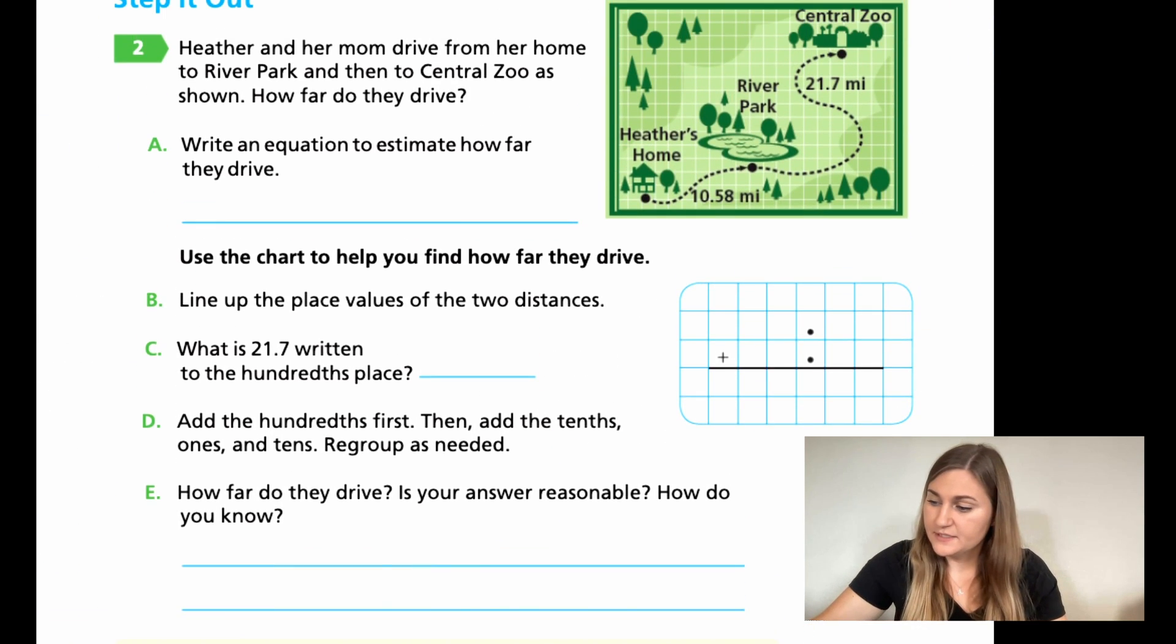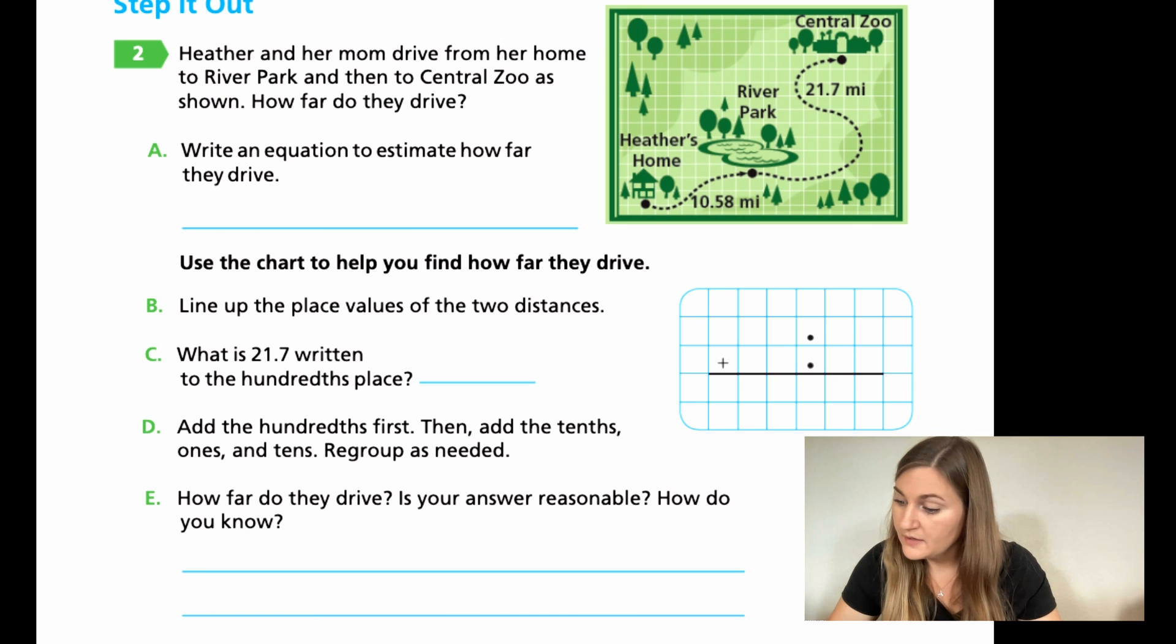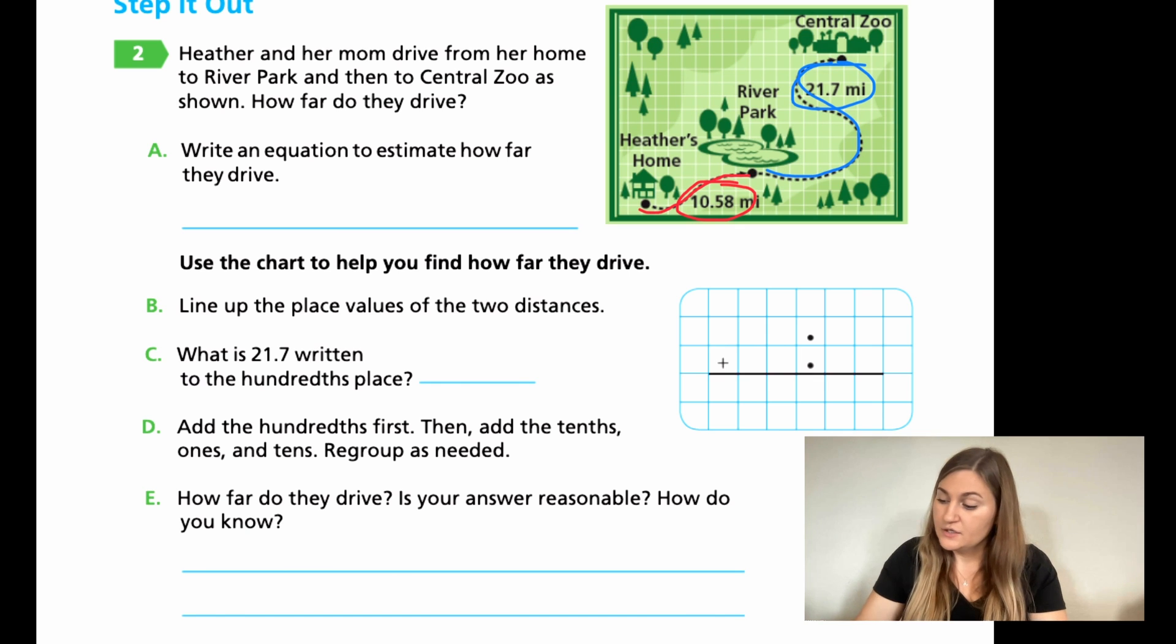Now we're on 352. Number two says, Heather and her mom drive from her home to River Park and then to Central Zoo as shown. How far do they drive? So in this picture, Heather and her mom drive from her home to River Park. So they go from Heather's home, which is this little home. They go to River Park. That's the first part. And then to Central Zoo. So that would be another part of the drive. In red, that first journey, it's saying it's 10.58. And that second journey is telling you it's 21.7.